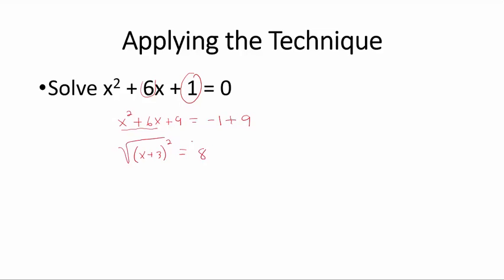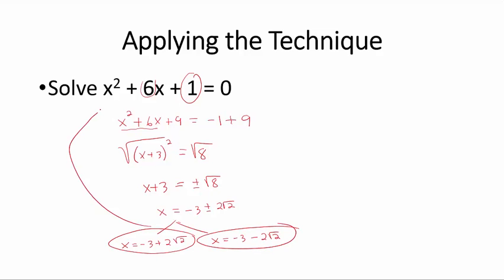If we take the square root on both sides, we get that x plus 3 is equal to plus or minus the square root of 8, which is 2 square root of 2. So we have two values for x: x is negative 3 plus 2 square root of 2, or x can be negative 3 minus 2 times the square root of 2, and those are the solutions to this quadratic equation, which we have solved by applying the technique called completing the square.